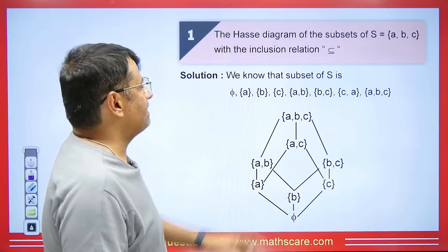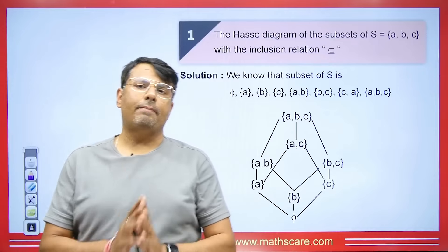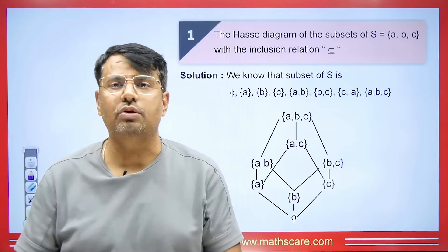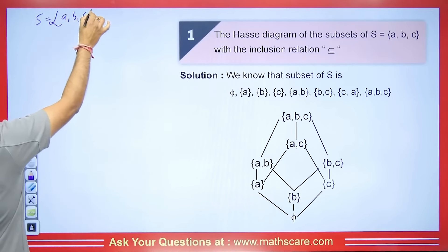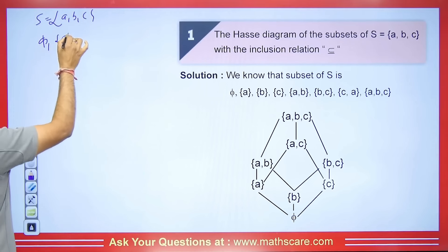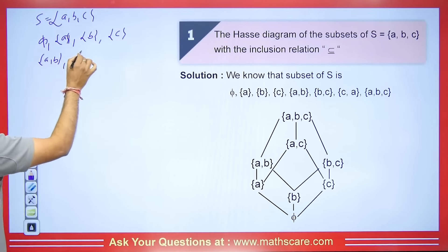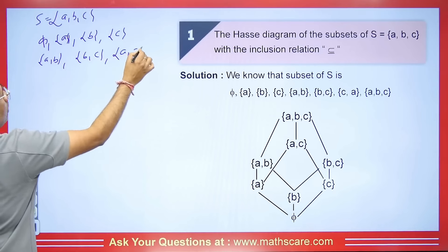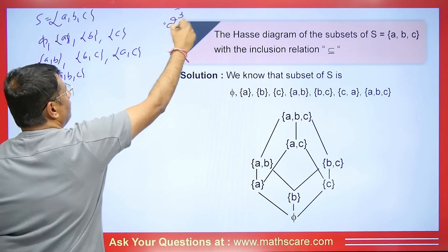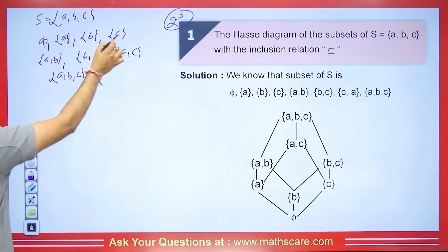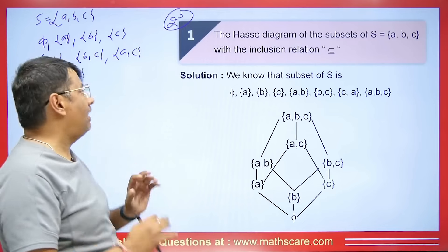If you understand Hasse diagrams properly, then you can understand lattices and all related things easily. Let's see a question: what will be the Hasse diagram of the subsets of set S = {A, B, C}? The set of all subsets is the power set. The subsets are: φ, {A}, {B}, {C}, {AB}, {BC}, {AC}, and {ABC} — that's 2³ = 8 subsets.